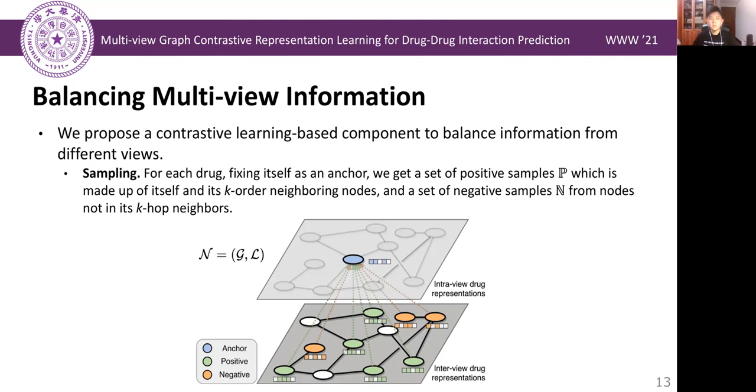And the set of negatives are sampled from nodes not in its k-hop neighbors. Usually, we set k equals 2.